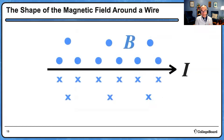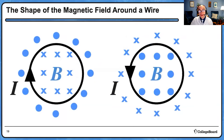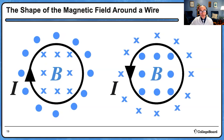You'll have to be able to do that in any orientation. Likewise, you'll need to be able to identify the direction of the magnetic field inside a loop of wire. A loop carrying clockwise current makes an inward X magnetic field inside the loop, while a loop carrying counterclockwise current makes an outward dot field.